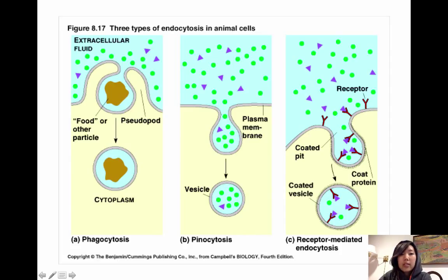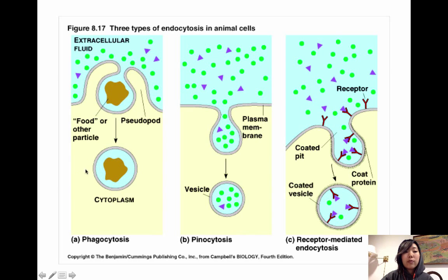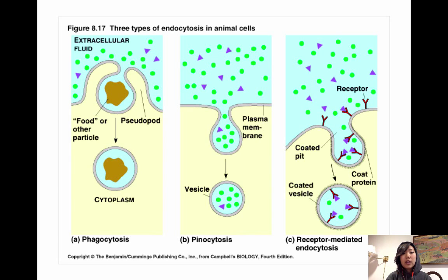This slide shows the different types of endocytosis. Phagocytosis is like the cell eating — it takes in large substances from outside. The cell forms pseudo-arms that come out, wrap around the food, close in on themselves, and form a new food vacuole. Pinocytosis is similar, except the cell forms more of an indentation, taking in liquids and very small solutes, then closes to form a vesicle — that's how it drinks or takes in fluids.